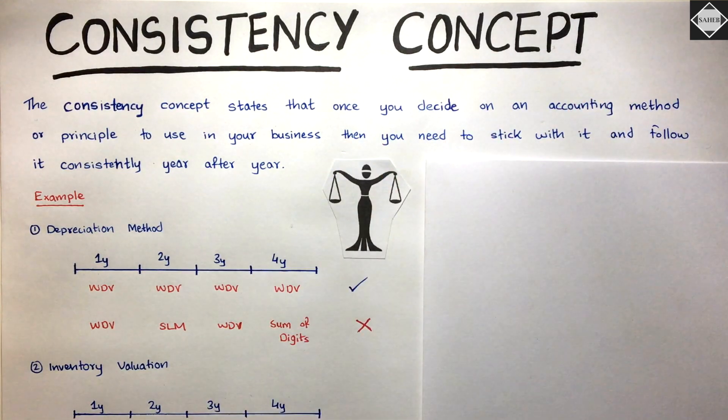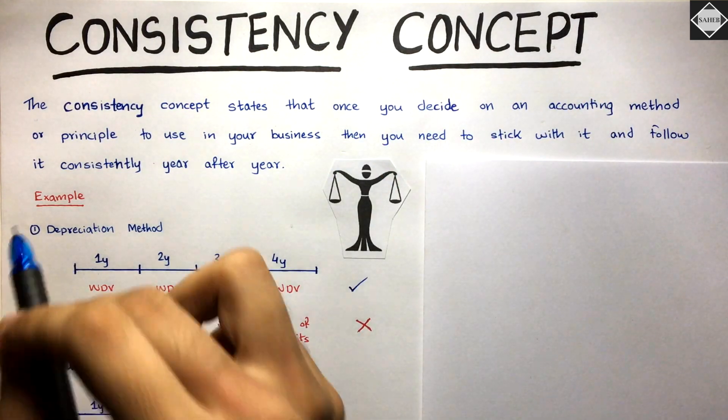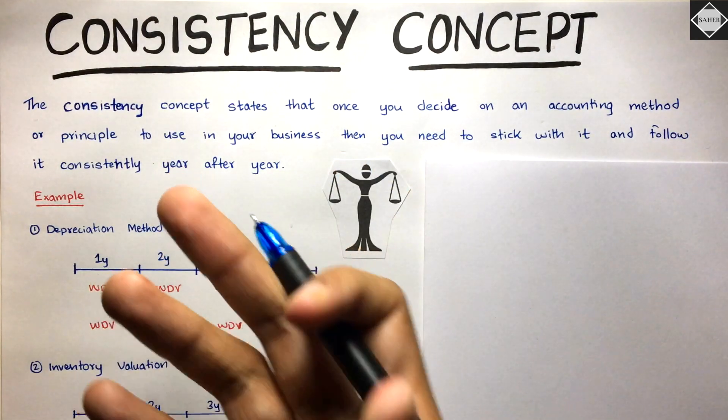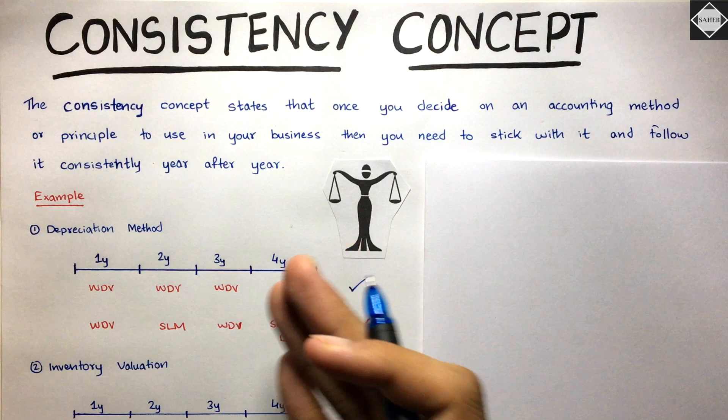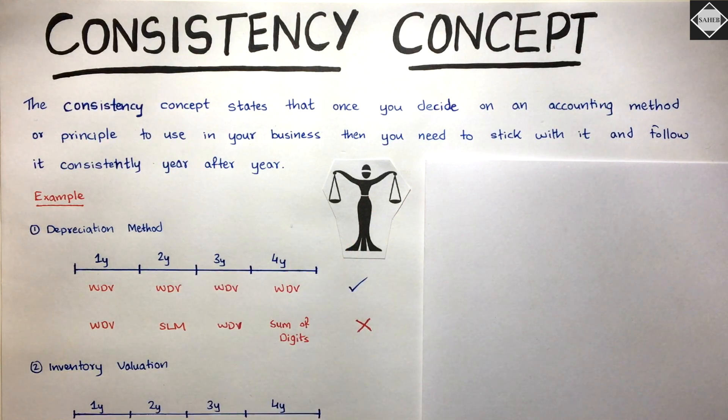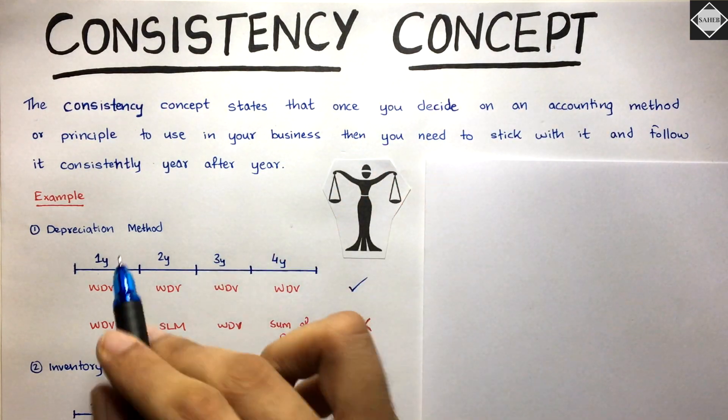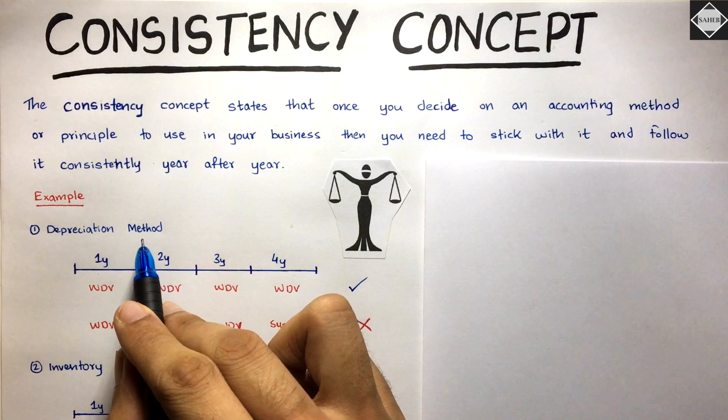Let's say you have a business and you purchase a truck. On PPE (property, plant, and equipment), we have to charge depreciation on fixed assets. When you charge depreciation, how do you calculate it? You estimate it through various methods that are available.